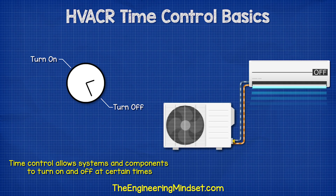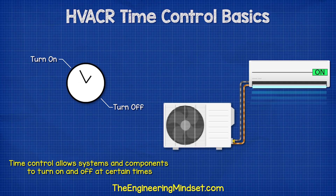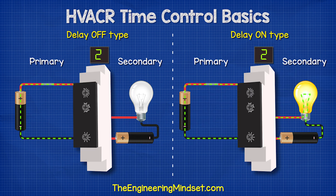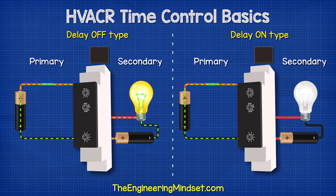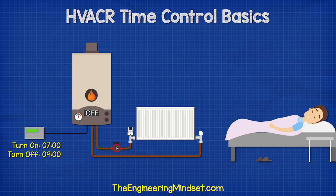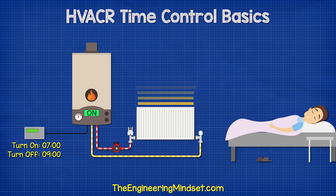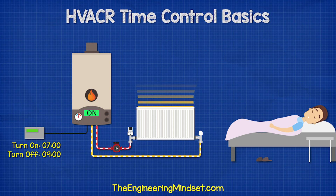Time control allows systems and components to turn on and off at certain times, as well as for certain durations of time, or we can delay something turning on or off for a certain amount of time. For example, on a cold morning, we want the heating to turn on before we wake up so that the house is nice and warm.